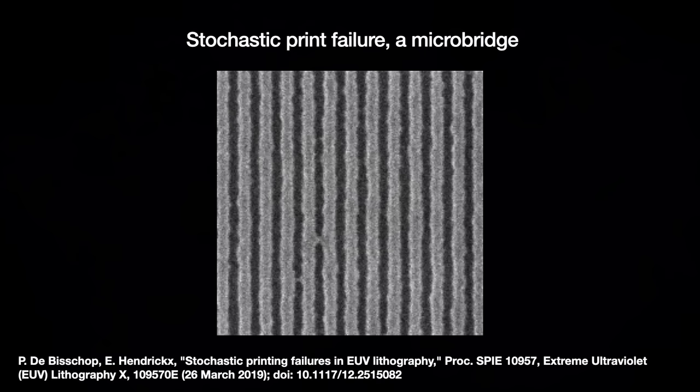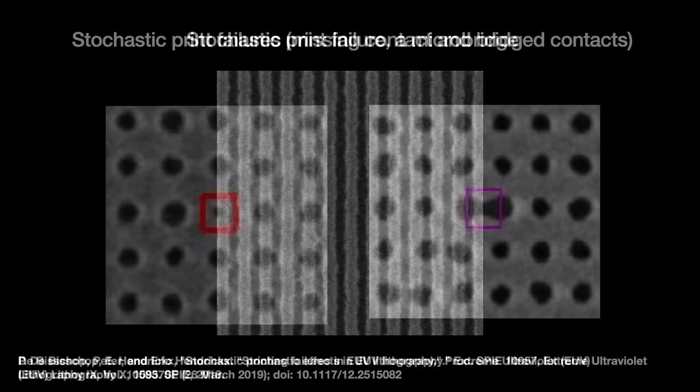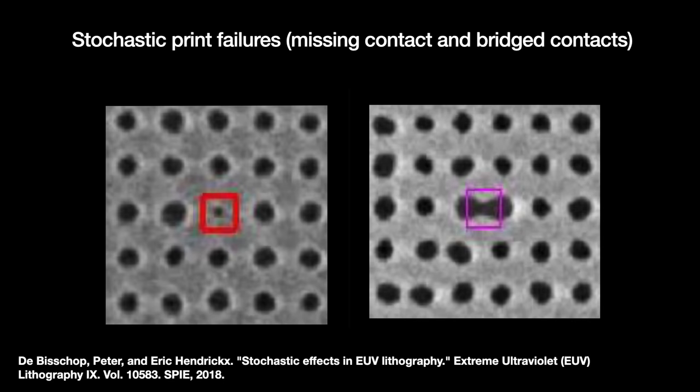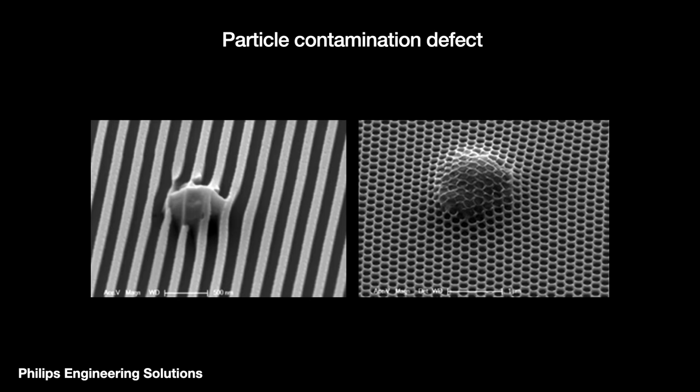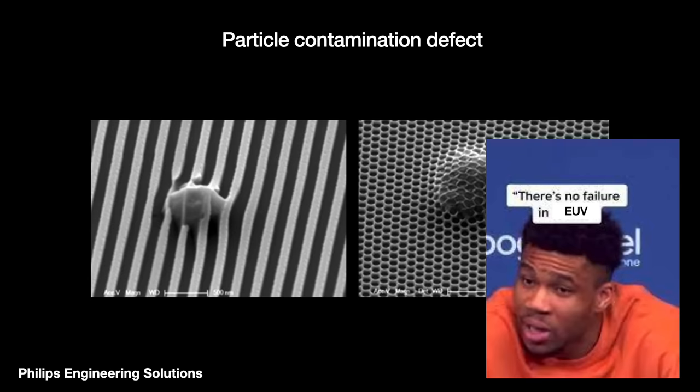What this all means is that stochastic effects on EUV lithography leave various print failures on the wafer. Broken lines, microbridges, and rough edges on designs. We call them failures rather than defects. Why? Because a defect is something that happens due to particle contamination, pattern collapse, or otherwise. This is different from that. Stochastic print failures are far smaller, completely random and thus non-repeating, and come via a law of nature. The randomness is unavoidable.